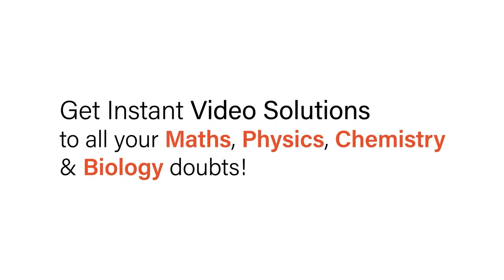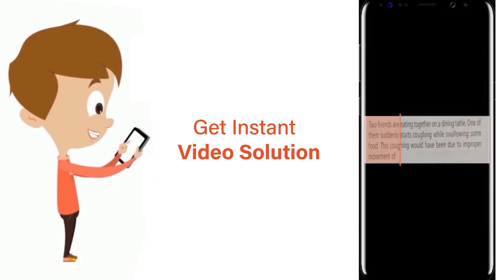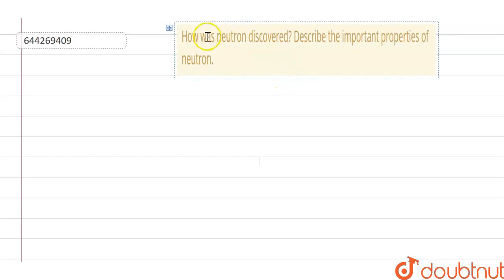With DoubtNet get instant video solutions to all your maths, physics, chemistry and biology doubts. Just click the image of the question, crop the question and get instant video solution. Download DoubtNet app today. Hello everyone, the question is how was neutron discovered? Describe the important properties of neutron. So now let us understand what are neutrons and where they are found.